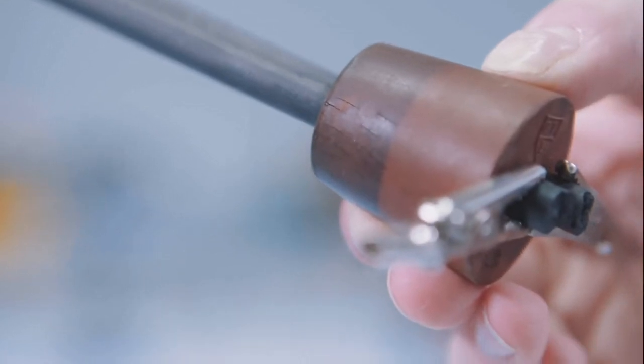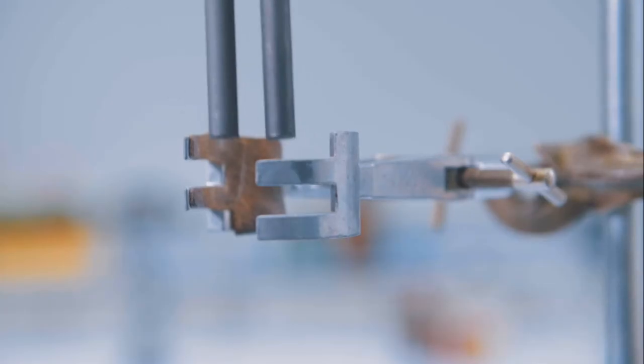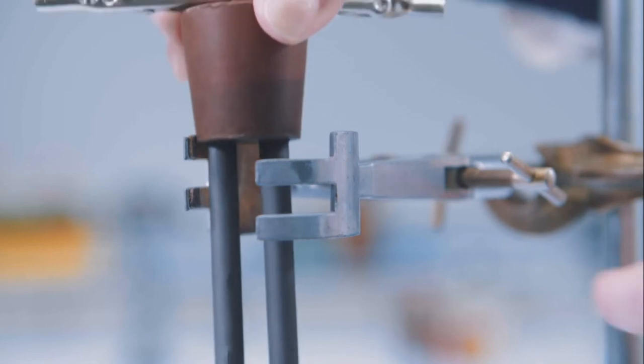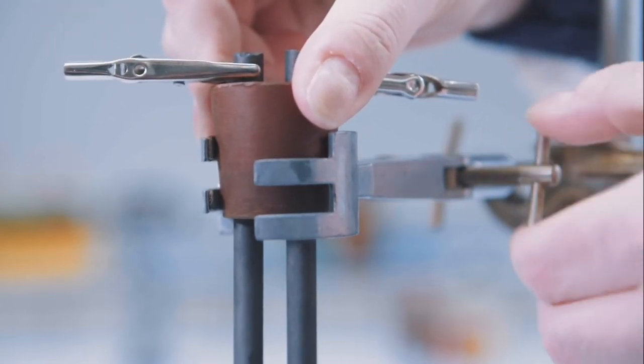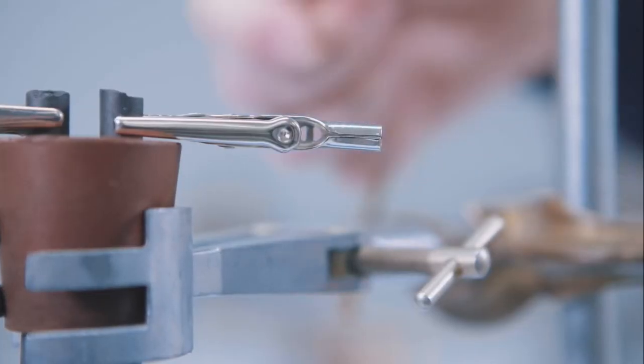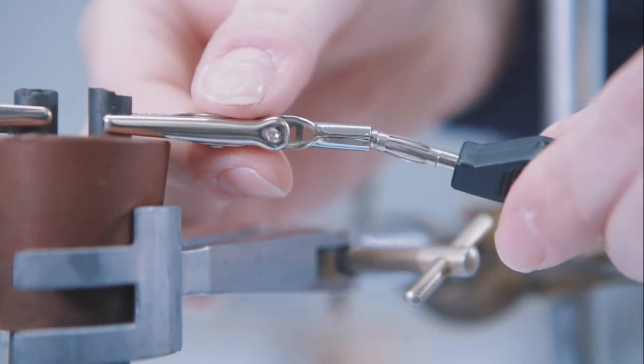The graphite rods should be firmly held in the rubber bung at one end. The bung is then firmly held in a clamp and the electrodes connected by crocodile clips.